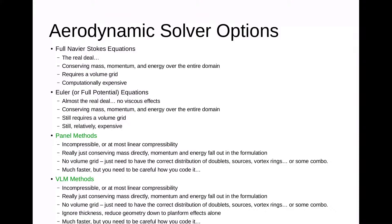Panel methods are generally incompressible, or at most linear compressibility. They're really just conserving mass directly. There's no volume grid — you just need the surface geometry and find a distribution of doublets, sources, vortex rings, or some combination that satisfies the flow tangency boundary conditions on your geometry. If coded right, they're much faster than Euler or Navier-Stokes. VLM methods — vortex lattice methods — are basically the same, but the big thing is that thickness is ignored in general, reducing the geometry down to just planform effects alone — that potato chip type model. Compared to panel methods, that simplification makes it much faster.